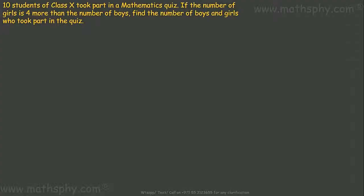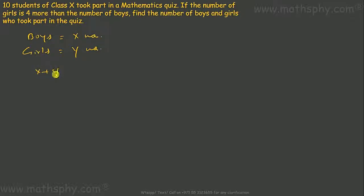First, let's form the linear equations. I'll take boys as x and girls as y. x numbers, y numbers means x plus y is equal to 10 — that's my first equation. 10 students of class 10 took part in the mathematics quiz means the total x plus y should be 10.